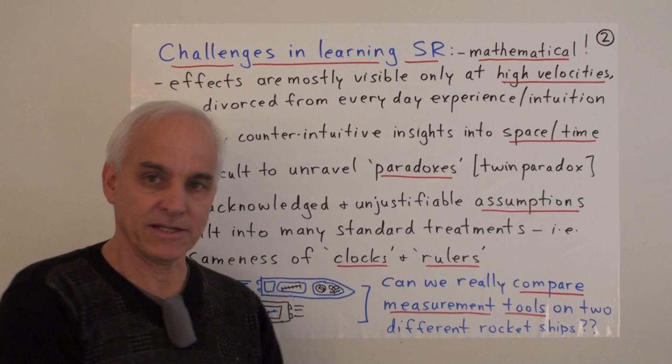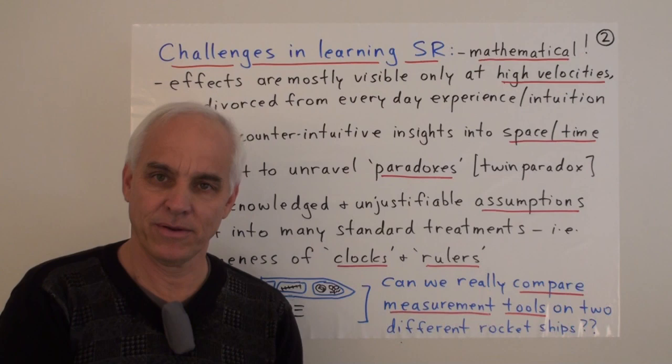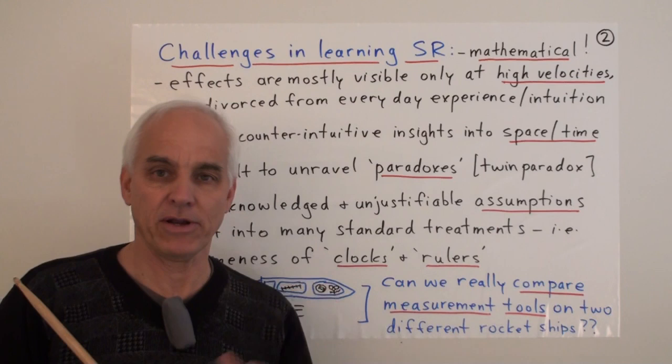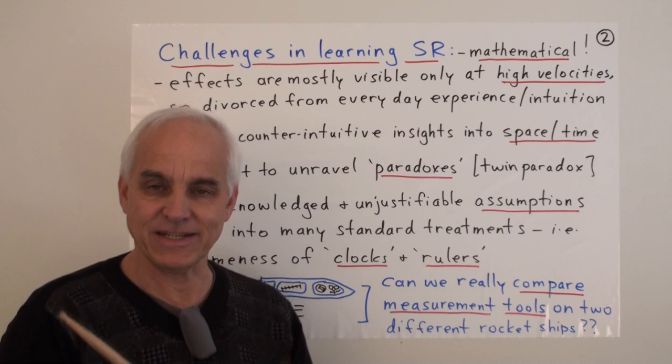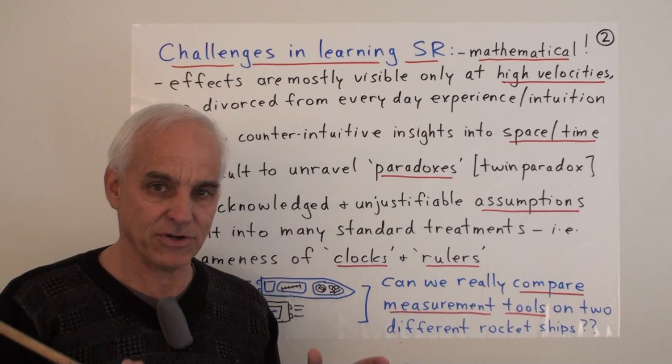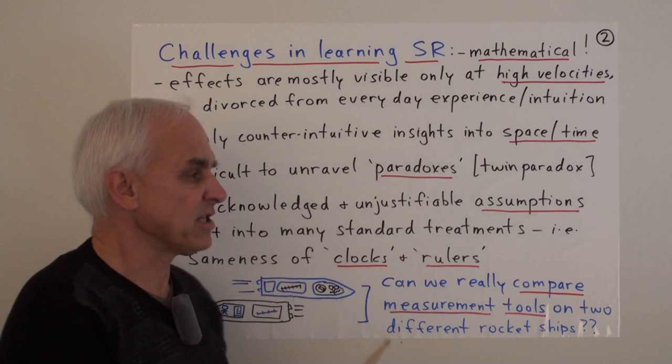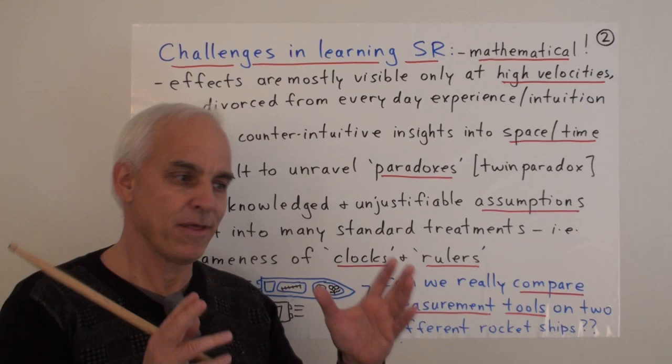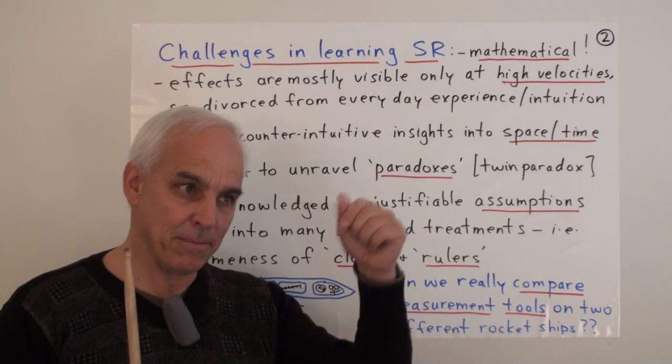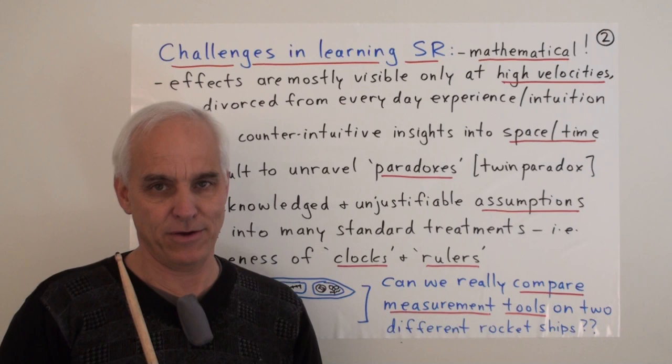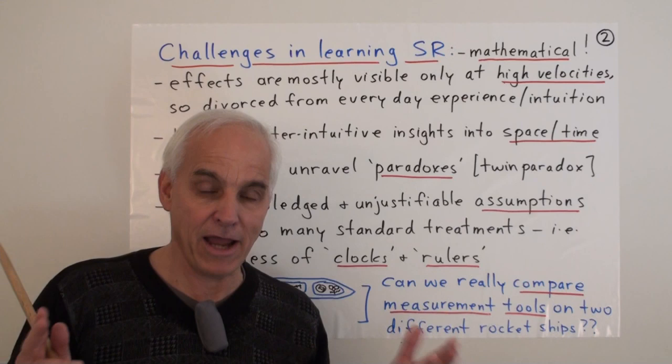Another reason is that the effects are mostly visible only at high velocities. So they're divorced from everyday experience and intuition. Special relativity generally doesn't play any role at all in our ordinary lives. So our biology has not been evolutionarily trained to deal with it, to give us mental constructs or physical constructs that allow us to understand what's going on. So that's a big reason why it's difficult. There are highly counterintuitive insights into space and time. The idea that space and time really ought to be thought of in one configuration rather than space here and time ticking away completely independently is a very hard one for ordinary people to get their heads around. It seems as if space and time are completely different kinds of things.